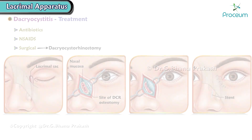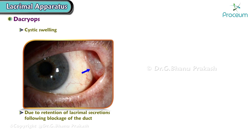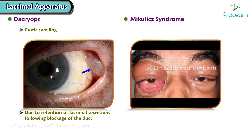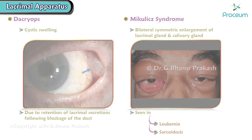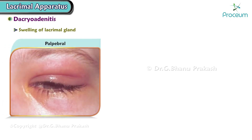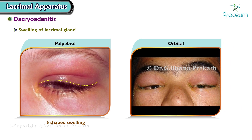Dacryocystorhinostomy is the surgical treatment. Dacryops is a cystic swelling due to retention of lacrimal secretions following blockage of the duct. Mikulicz syndrome is bilateral symmetric enlargement of the lacrimal gland and salivary gland, seen in leukemia, sarcoidosis, etc. Dacryoadenitis is swelling of the lacrimal gland — palpebral dacryoadenitis presents as an S-shaped swelling; in orbital dacryoadenitis, the eyeball goes down and in.